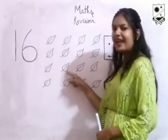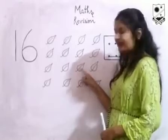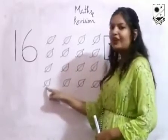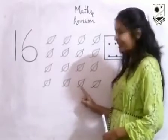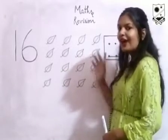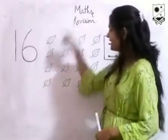9, 10, 11, 12, 13, 14, 15, 16. How many leaves are there? 16 leaves are there.